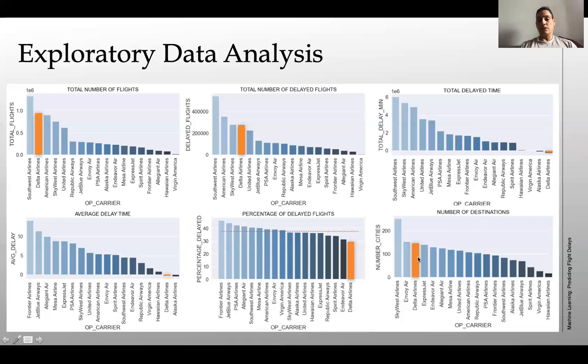Then the last one is the number of destinations. Once again, Delta Airlines is top five. So based on these statistics, what you can see right away is that regardless of the quality of service that they give, when it comes to the delay, Delta Airlines is actually one of the top airlines. Just keep in mind that I'm using data from 2018. So this can be an outlier, so take this with a pinch of salt because this is a one-year analysis.